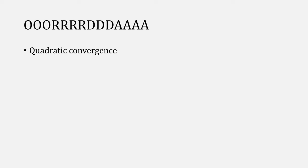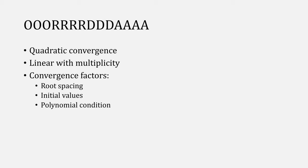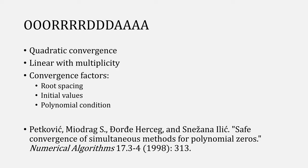The order of Durand-Kerner is quadratic, but it can be linear when multiplicity is involved. There are other factors that impact its performance, such as the spacing of the roots, your initial starting values, and just the condition of the polynomial in general. For more reading, I would suggest this paper on safe convergence of simultaneous methods for polynomial zeros.